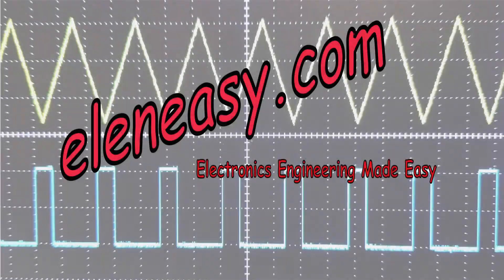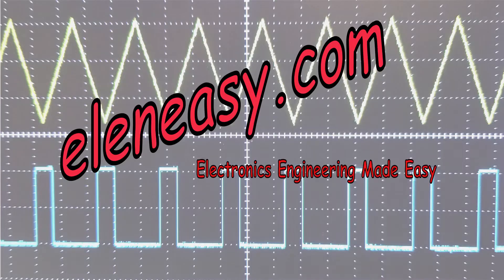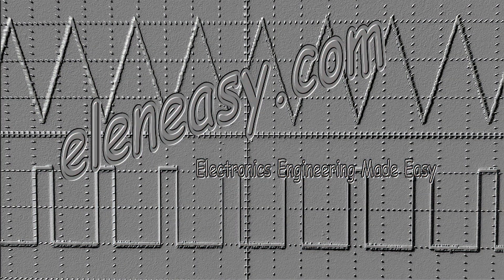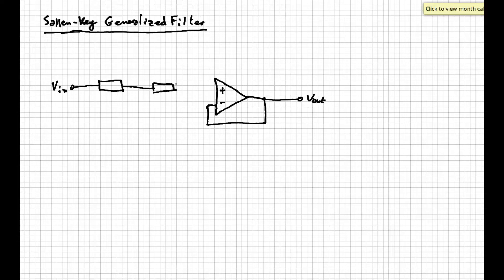Let's begin! Here is the schematic of the most generic Sallen-Key filter. Its functionality is based on these four impedances present in the circuit.